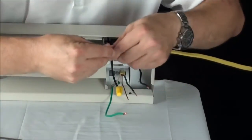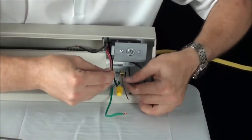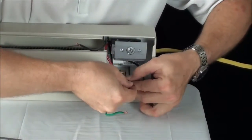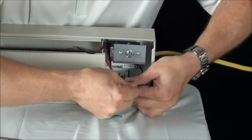You then want to hook the red wire that's coming from your thermostat to the black or the red power wire that's coming from your power source.